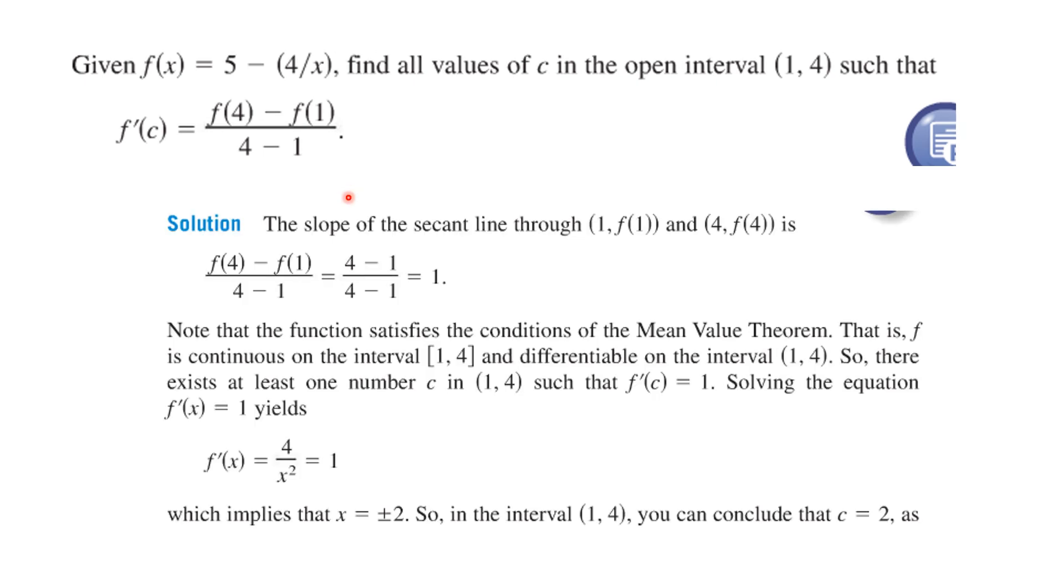Okay so first of all we have to figure out what is f of 4 minus f of 1 over 4 minus 1. We do the calculation we find that that is 1. We also should note before we invoke the theorem that it does satisfy the conditions of the mean value theorem. It's continuous on the closed interval differentiable on the open interval. So by the mean value theorem there exists at least one number such that f prime of c is equal to 1. So if we solve that equation we take the derivative of this we get that and that tells us that x could be plus or minus 2 but only one of those values is in the interval and so the answer to the problem is c equals 2.